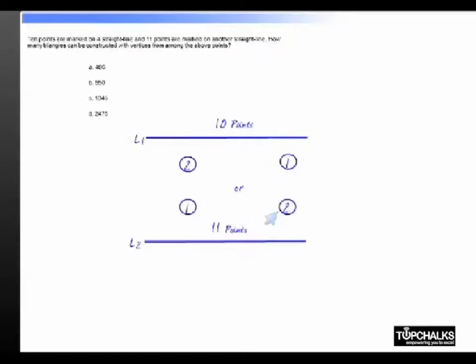Hence this can be done in 10C2 times 11C1, or 495 ways. This can be done in 10C1 times 11C2, that is 550 ways. Hence the total number of unique triangles that can be formed is 550 plus 495, which equals 1045.